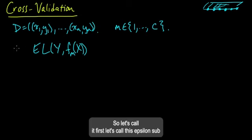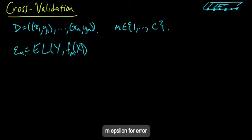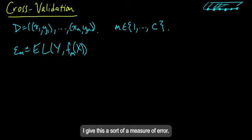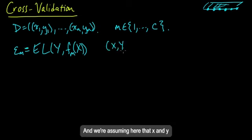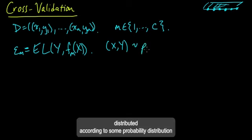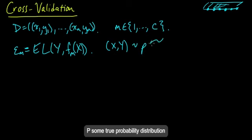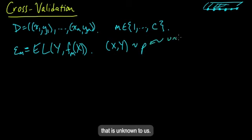And we want to choose M to minimize this quantity. So let's call this epsilon sub M, epsilon for error. Think of this as a measure of error. And we're assuming here that X and Y are random variables distributed according to some probability distribution P.